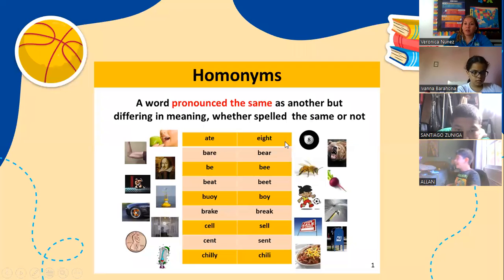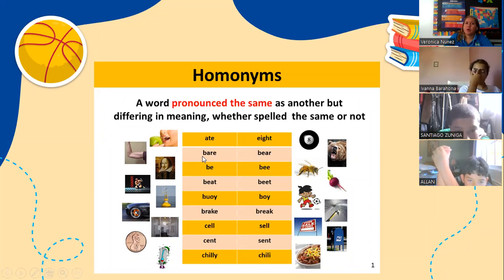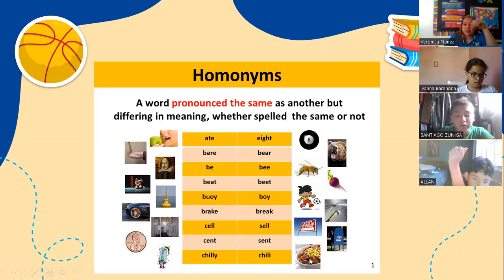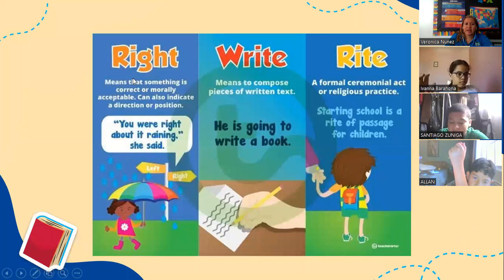First word: eight, ate. The first one is past tense of eat. Bear, bare. Beat, beet. Boy, buoy. Break, brake. Sail, sale. Sent, scent. Chili, chilly, chili. This is being said like two and two and two beans. Chili and chilly is cold weather. Okay, so another example.